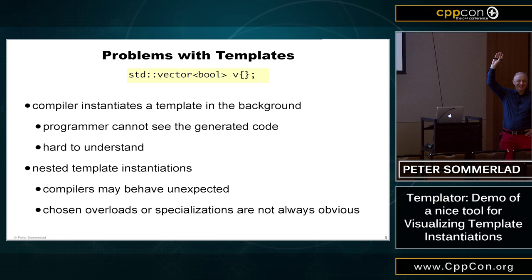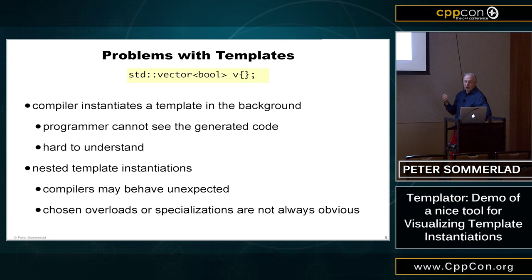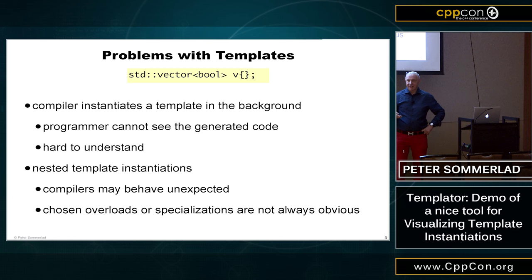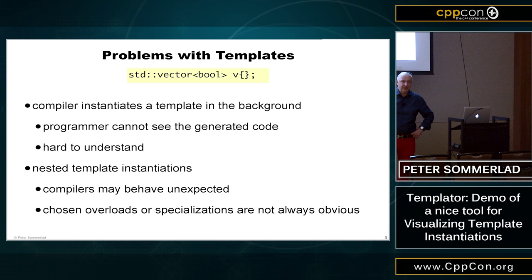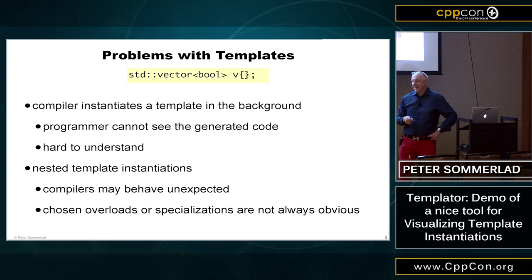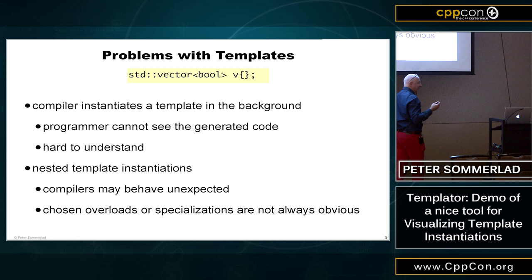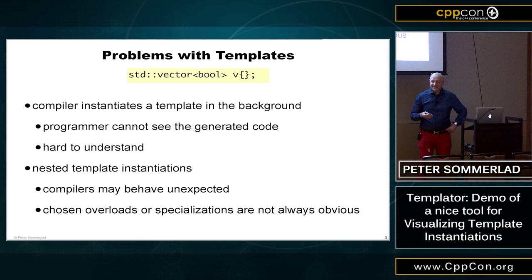The thing with templates is that the compiler creates code for us in the background that we cannot see. We only see it when we get an error message. And these error messages can be quite tedious to understand and read. Especially in C++, some of the language rules are quite complicated. There are a lot of reasons for them to be complicated, especially surrounding templates and especially function templates — there are some interesting rules that are correct, but not always as the programmer would expect them to be.